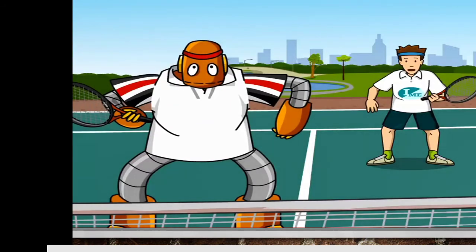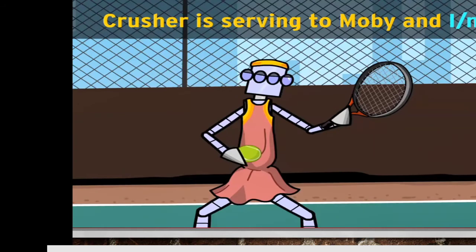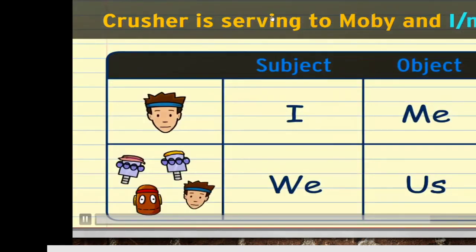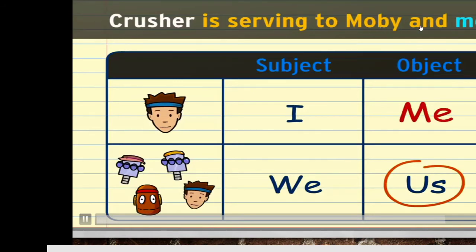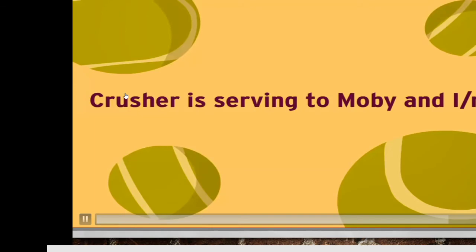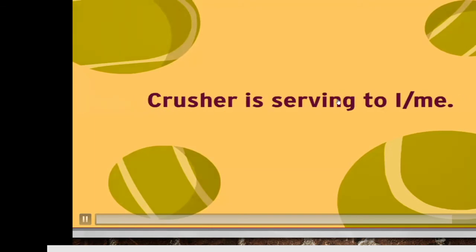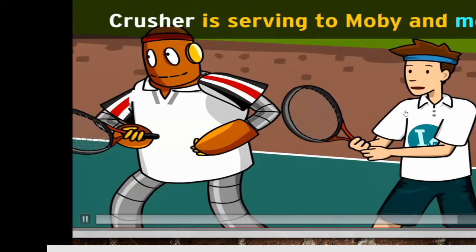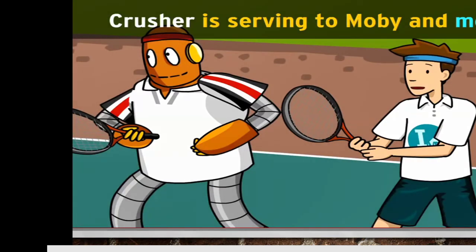I like this. Let's try another one. Crusher is serving to Moby and... It's tempting to pick 'I' when you're not quite sure. But look at the verb — 'serving' is the verb. Crusher is the one who's serving, and he's serving to us. After the verb, the singular form of 'us' is 'me': serving to Moby and me. For a shortcut, just drop the other noun. You wouldn't say 'Crusher is serving to I' — so: Crusher is serving to Moby and me.